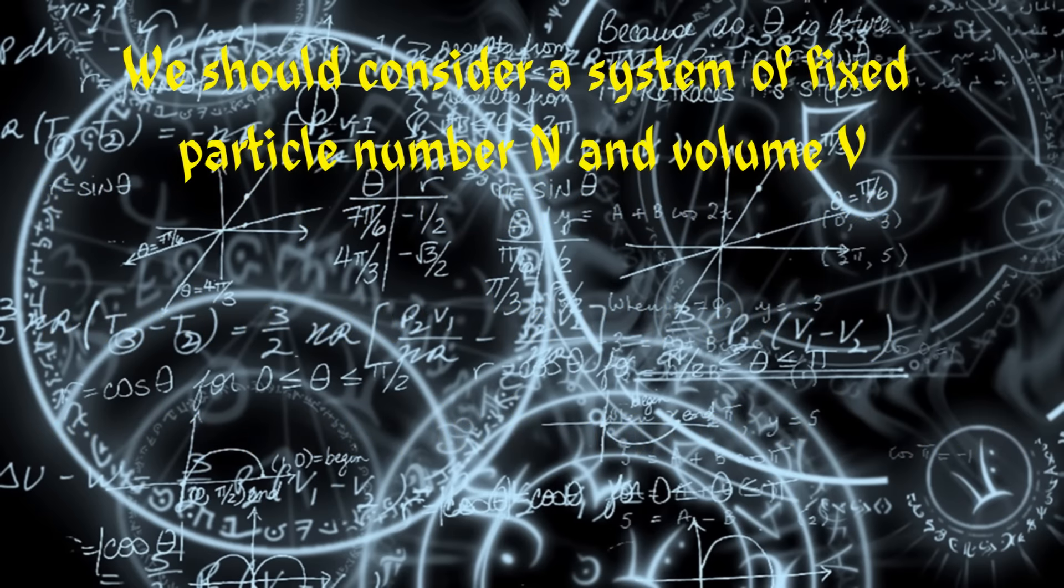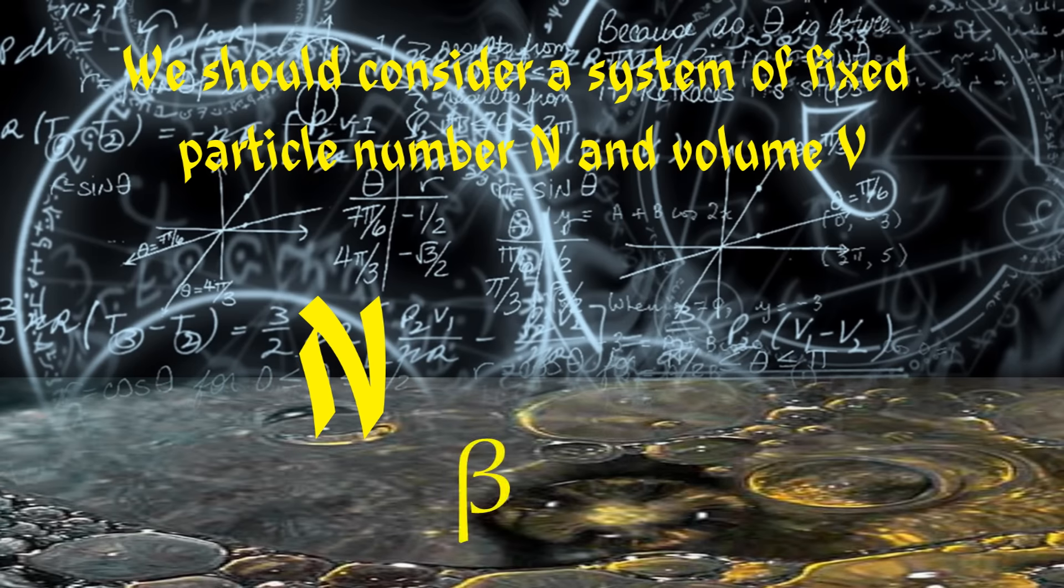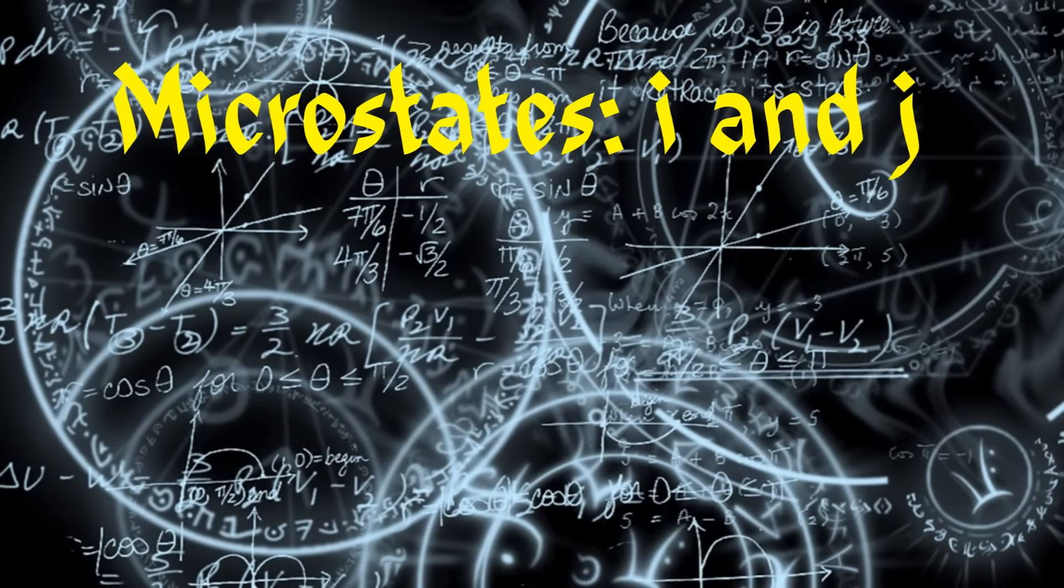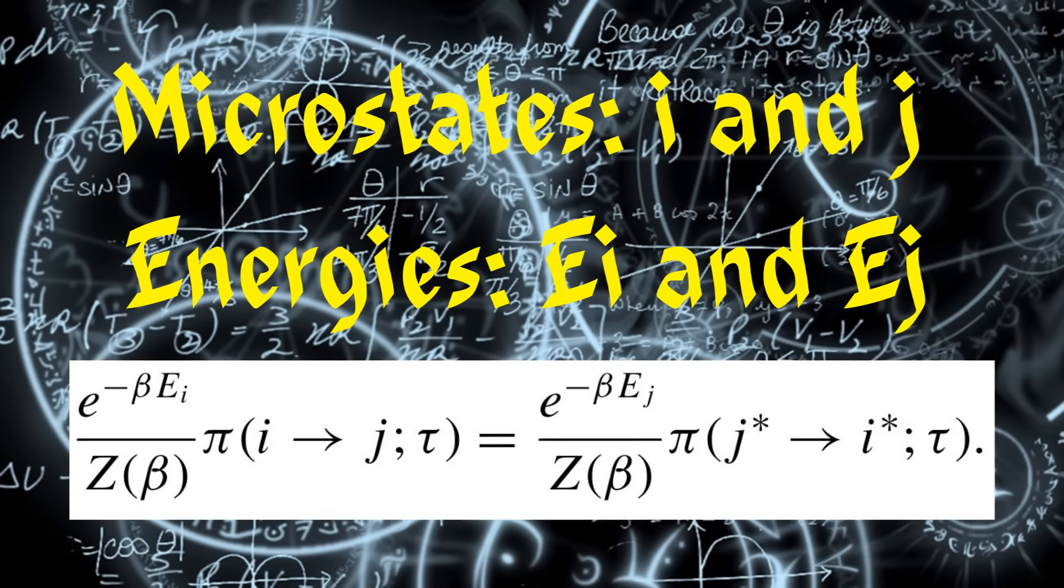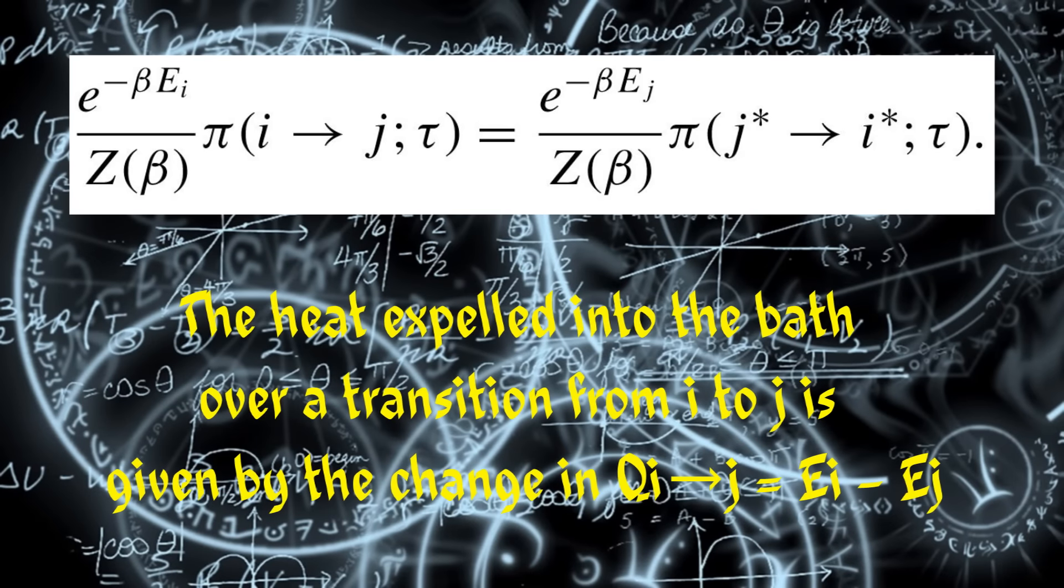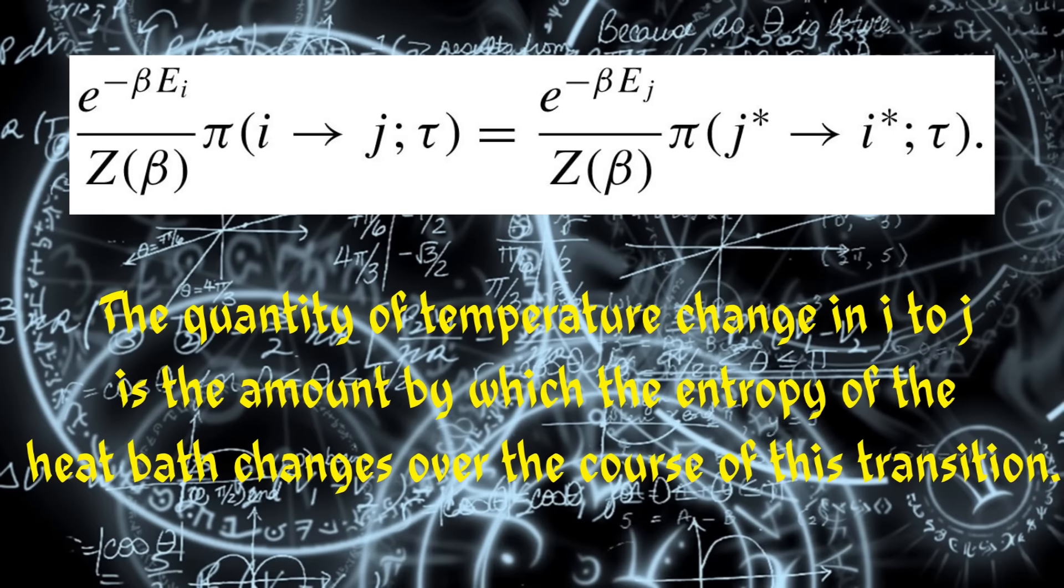For the beginnings of a way forward, we should consider a system of fixed particle number N and volume V in contact with the heat bath of inverse temperature beta. If we give labels to the microstates in the system, I and J, and associate energies EI and EJ respectively with each microstate, then the symmetry tells us that this relation holds at thermal equilibrium. Progress comes from recognizing that the heat expelled into the bath over a transition from I to J is given by the amount of work from I to J equal to the difference in energies from I and J, and moreover that the quantity of temperature change in I to J is the amount by which the entropy of the heat bath changes over the course of this transition.